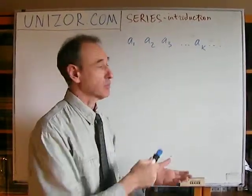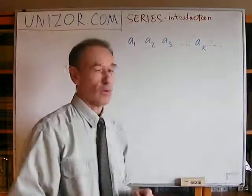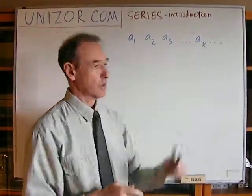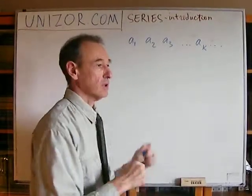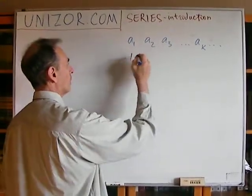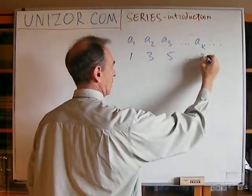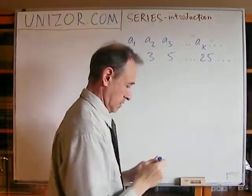If it's an infinite sequence, then it's defined for all natural indices. These are indices 1, 2, 3, 4, etc. Example: a sequence of all odd numbers.